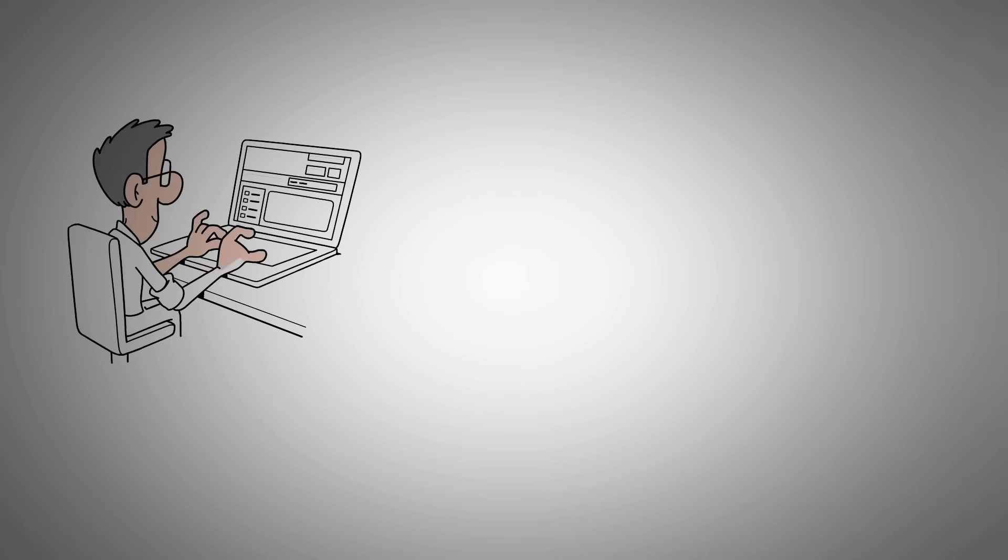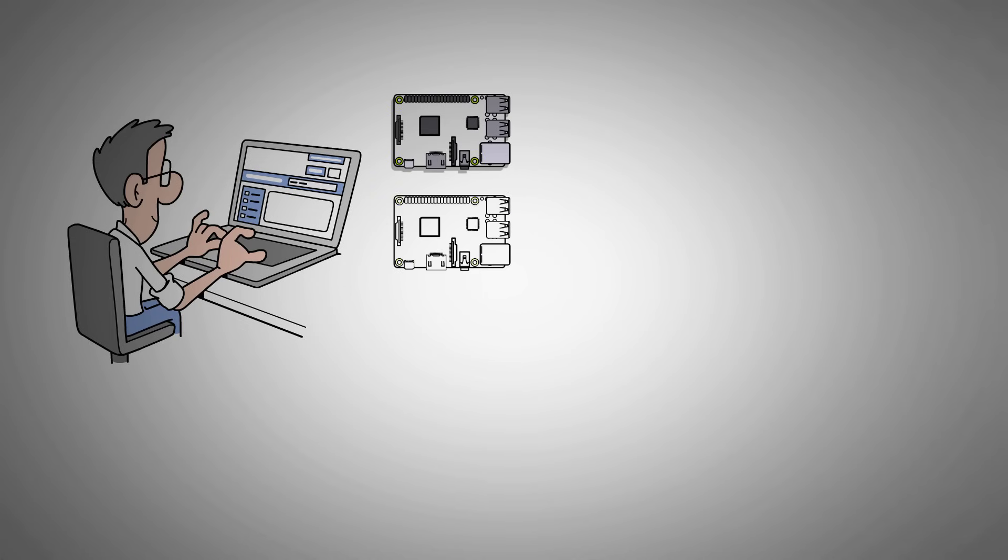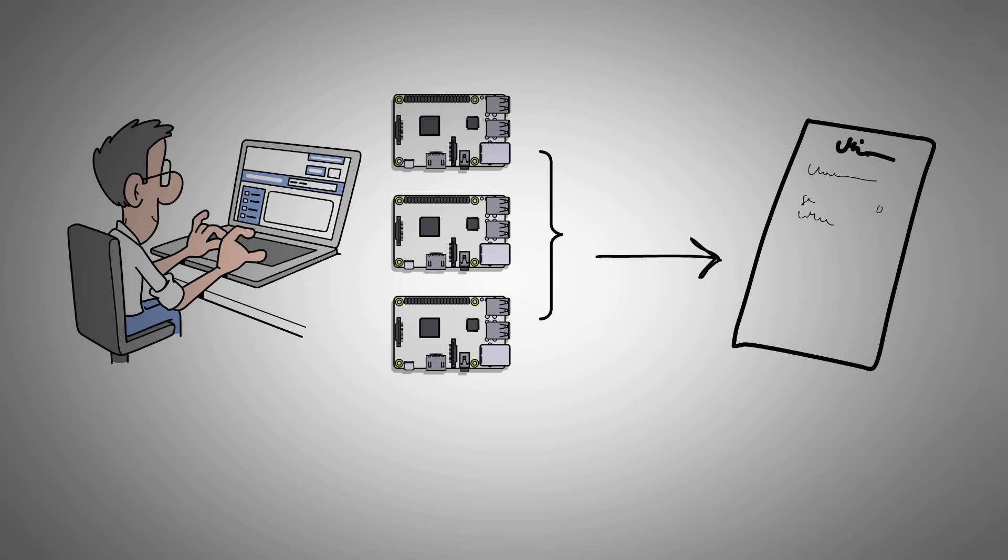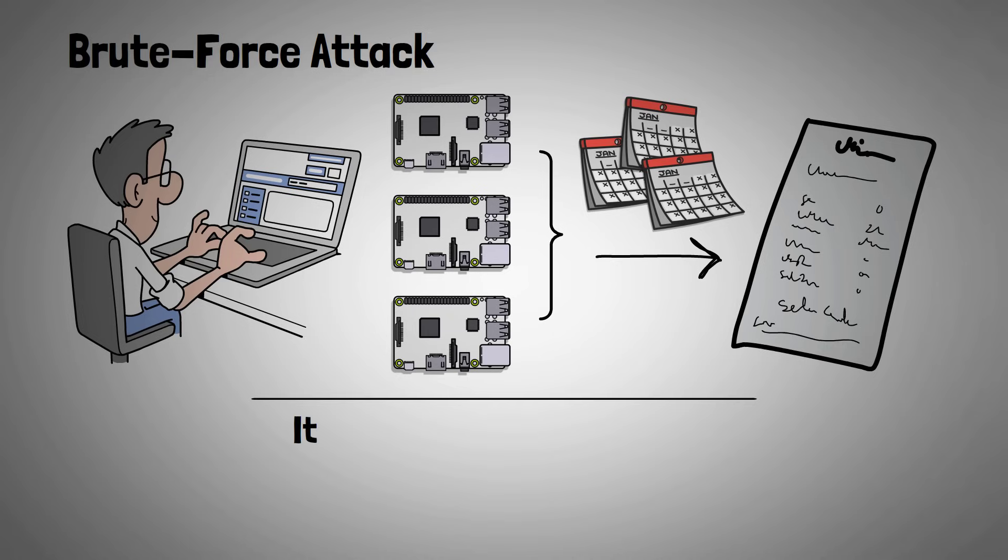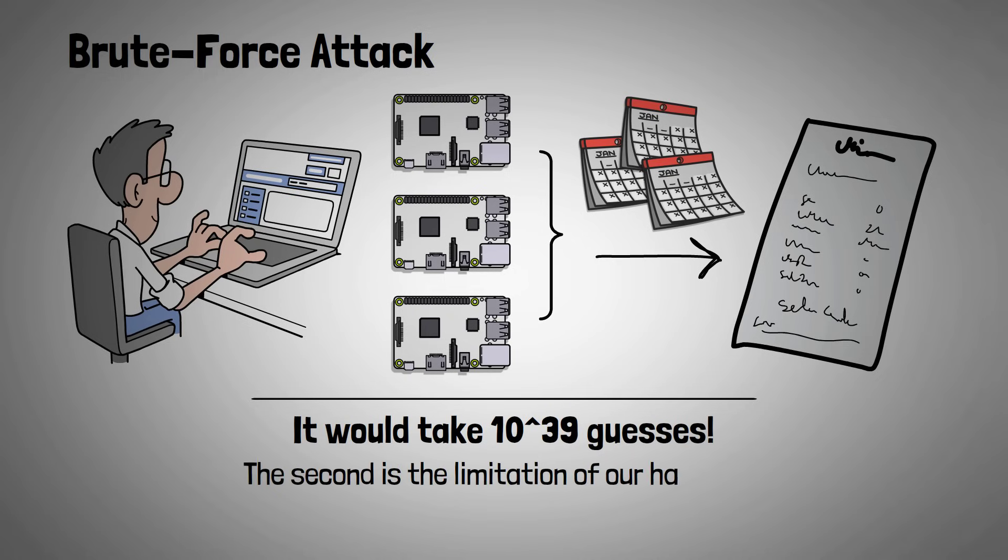One other vulnerability is that, in theory, a really smart computer could combine every single one of the 2048 words in different orders to try to figure out an active seed phrase. This is called a brute force attack. At the moment, the type of computing power that we have would take an astronomically long time due to two factors. The first is the length of the seed phrase, as we said earlier. It would take 10 to the power of 39 guesses, which is a huge number in computational power. The second is the limitation of our hardware to make these guesses.